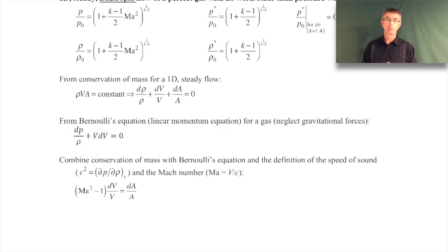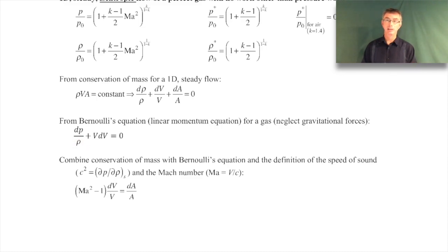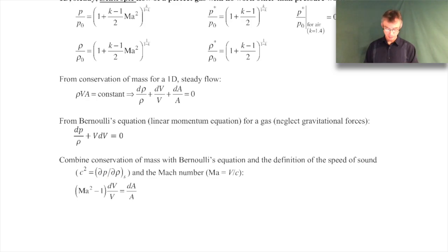This Bernoulli's equation holds whether the flow is incompressible or compressible. The incompressibility assumption comes into play when you integrate: if incompressible, the density is constant and can be pulled outside the integral; if compressible, it stays inside. But we don't need to integrate at this point. We combine these expressions along with the definition of the speed of sound - ∂P/∂ρ occurring isentropically equals the square of the speed of sound - and the definition of Mach number.